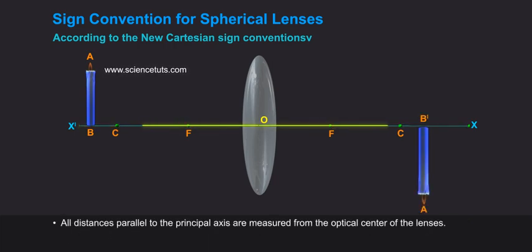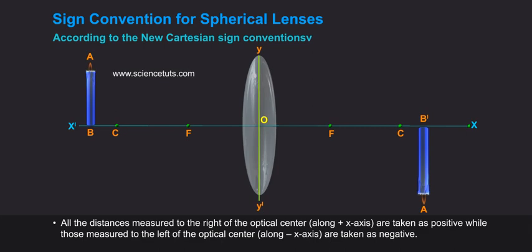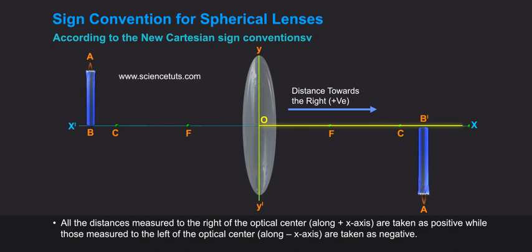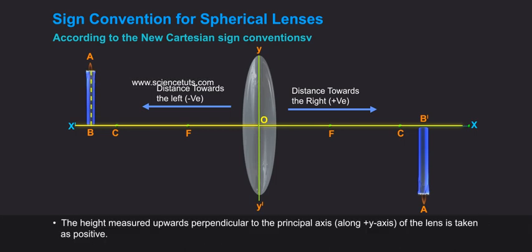All distances parallel to the principal axis are measured from the optical centre of the lenses. All the distances measured to the right of the optical centre along plus x-axis are taken as positive, while those measured to the left of the optical centre along minus x-axis are taken as negative.